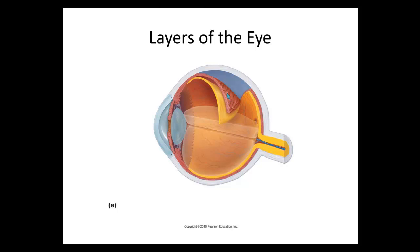Attached to the choroid in the front is a round muscle called the ciliary body. The ciliary body attaches to the lens via small suspensory ligaments and helps control the shape of the lens for viewing something up close or at a long distance. On the cell models it has a scalloped edge, kind of like a mushroom underneath the cap.